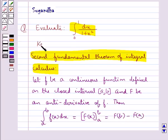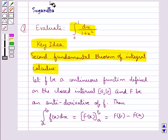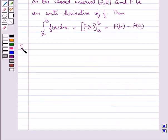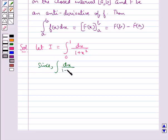This is the key idea for this question. Now let's move on to the solution. We take let I be equal to integral 0 to 1 dx over 1 plus x squared. Now since integral dx over 1 plus x squared is equal to tan inverse x, let this be equal to F(x).